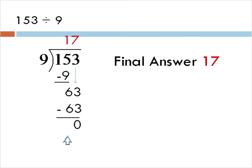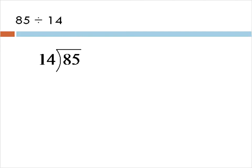All right, so that's the solution to this problem using long division. Now let's do another question with long division to show these same steps. We'll start with 85 divided by 14. We put the first number inside, the second number on the outside.